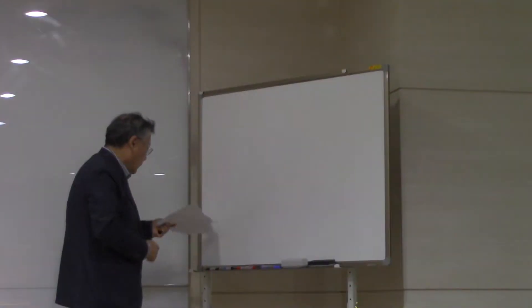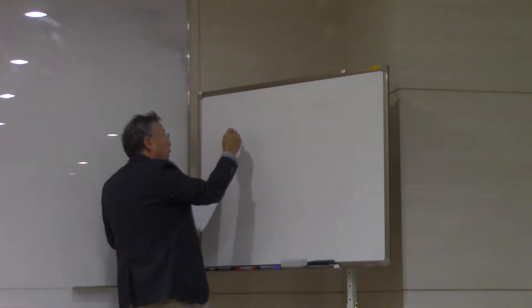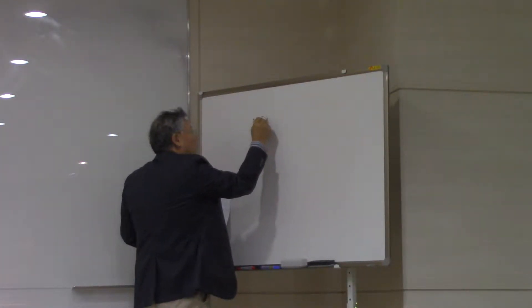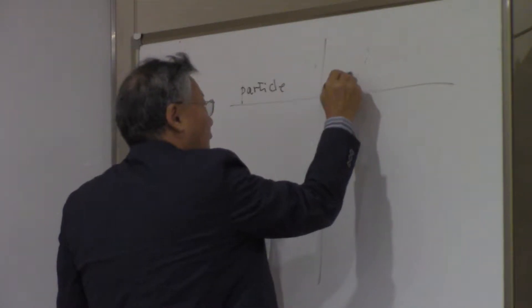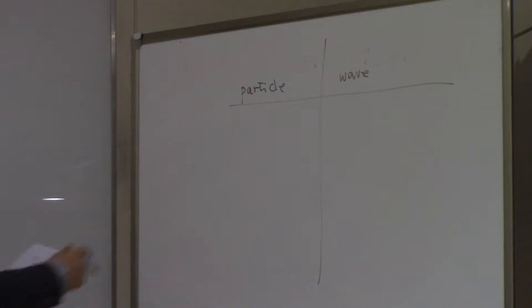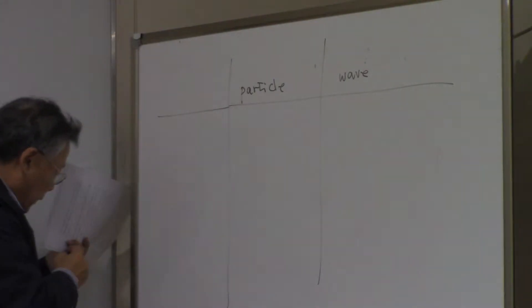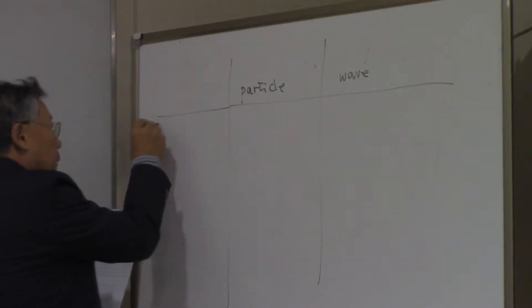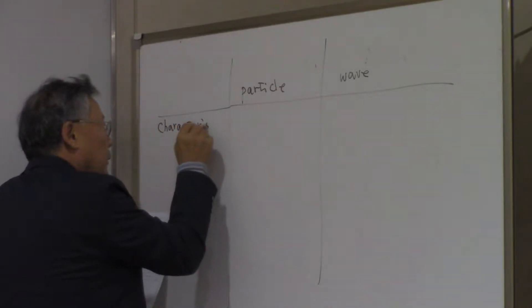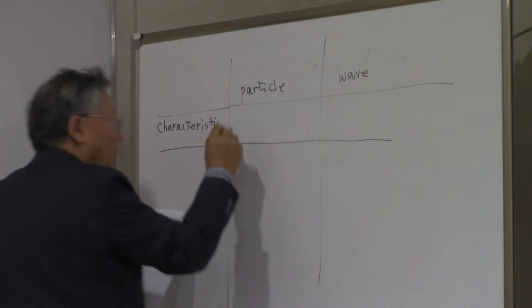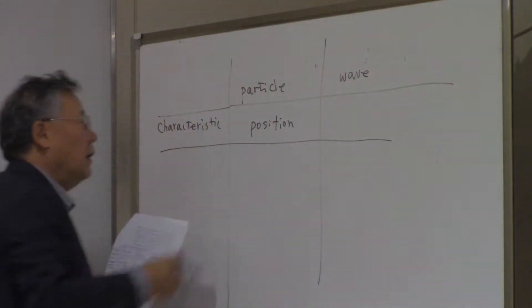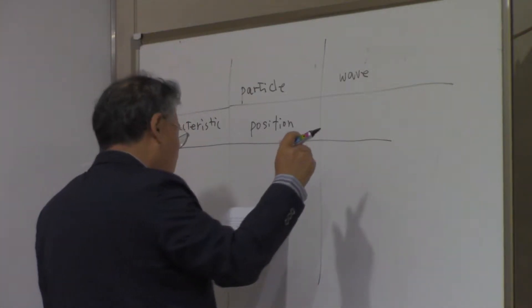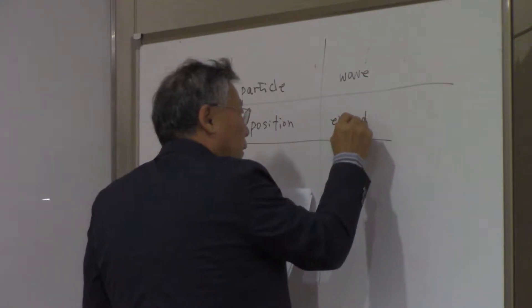Let's compare the particle-like features and the wave-like picture. If you talk about the characteristic: in the particle-like picture, the position in space is a characteristic of the particle's position. In a wave-like picture, it should be extended in space.